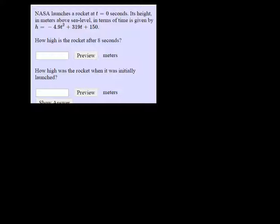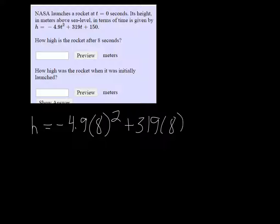How high is the rocket after 8 seconds? For that, we can just plug 8 in for t, so it would be negative 4.9 times 8 squared plus 319 times 8 plus 150, because 8 seconds is the time, so if we plug in time to the height function, it's going to give us height.